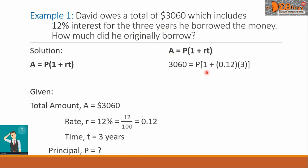One is a constant, and then plus the product of Rt, the R now becomes 0.12, and the T is 3.